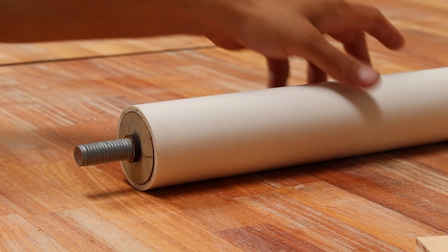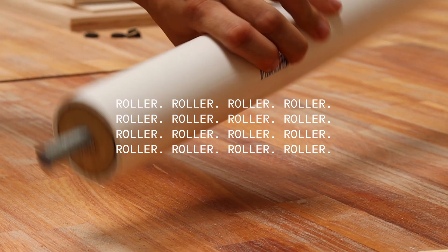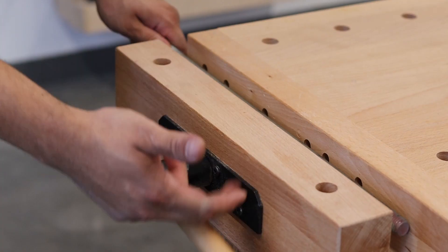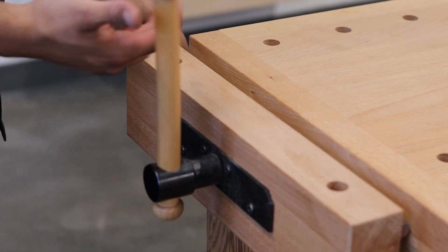Step number two. Cut the threaded bar to 19 and a half inches.